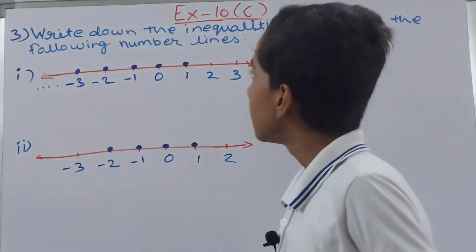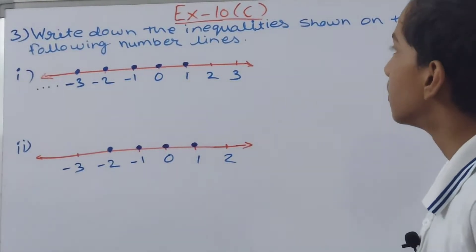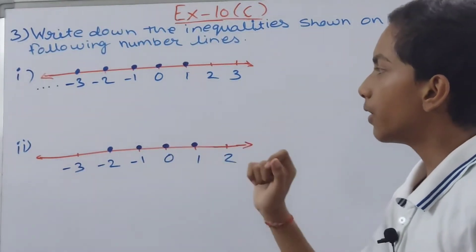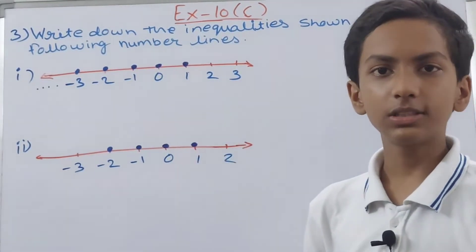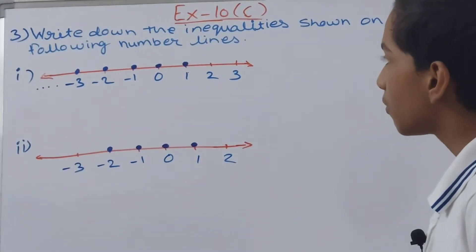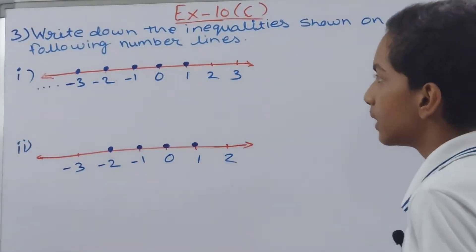This one is write down the inequalities shown on the following number lines. These are the inequalities on which inequalities are represented or plotted. We have to simply write the inequality which they are showing.